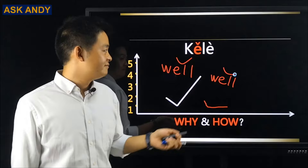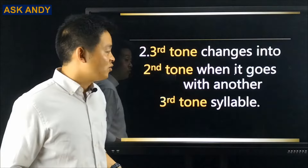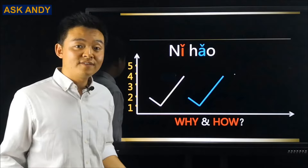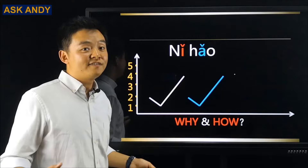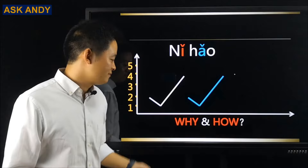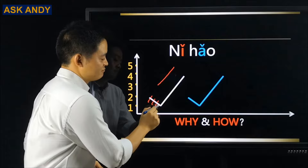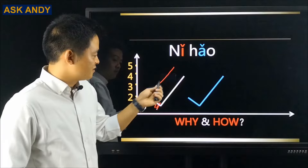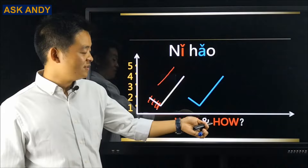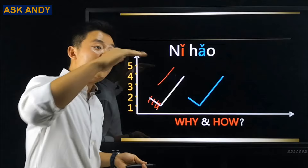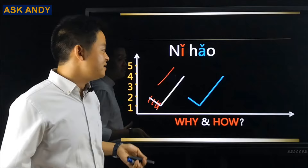Rule two: the third tone changes into the second tone when it goes with another third-tone syllable. Everyone knows this example — 你好 (nǐhǎo). If you tried to pronounce both as full third tones it would be too long, so we make the first third tone into a second tone. Think of it as a wave shape — it actually becomes more natural. So nǐhǎo is pronounced with a rising second tone on nǐ.